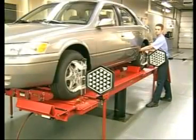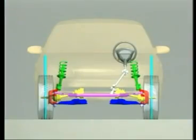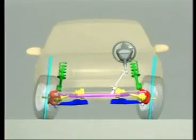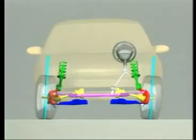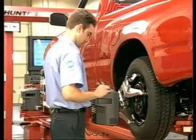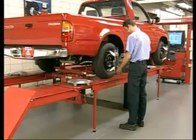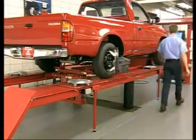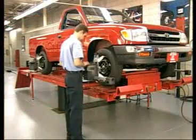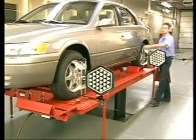Once you've determined which angle is out of alignment and the corrective actions to take, you will need to begin your wheel adjustment procedure. Wheel adjustment procedures are different for most vehicles. There are a variety of adjustment mechanisms including shims, cams, threaded rods, and slotted frames. Refer to the appropriate vehicle service manual for specific procedures.